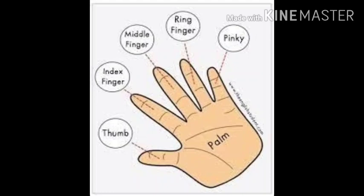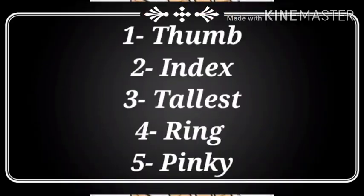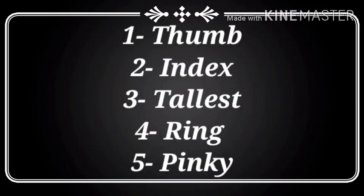The finger between the thumb and the tallest finger is called the index finger. और बच्चों, thumb और tallest finger के बीच में जो finger होती है, उसे हम index finger कहते हैं. So: first है thumb, thumb के बाद index finger, next है middle finger — इसे हम tallest finger भी कहते हैं. Tallest finger के बाद ring finger, और smallest finger यानि की सबसे छोटी finger को हम pinky finger कहते हैं.